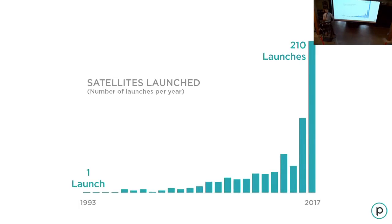These trends are only accelerating. This chart shows the number of satellites launched, and rest assured many more are planned. Each satellite launched in 2017 is far more capable than one launched in the 1990s, so it's just generating massive amounts of data.